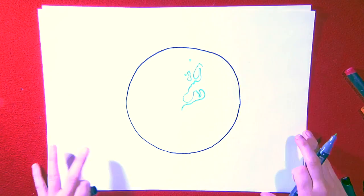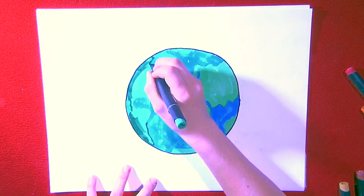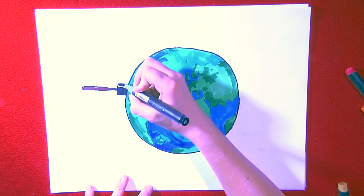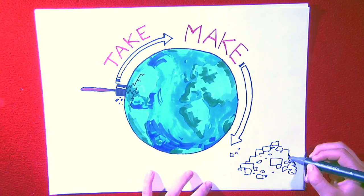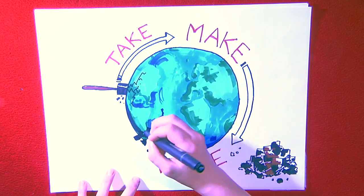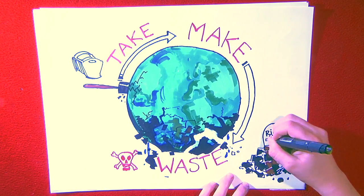However, we use our Earth as a source for raw materials as if natural resources were infinitely available. We extract them, make products from them, and dispose of them. This principle is called cradle to grave.